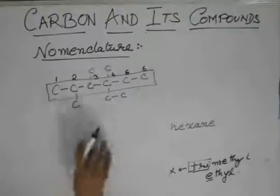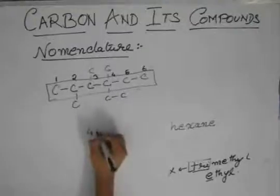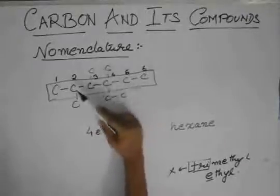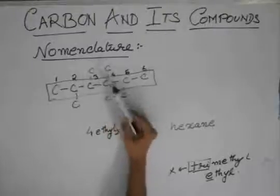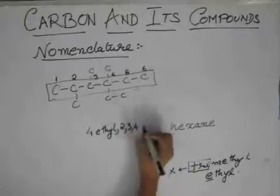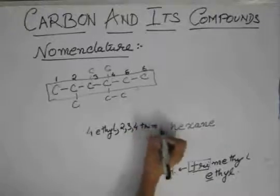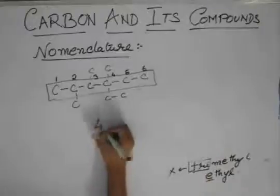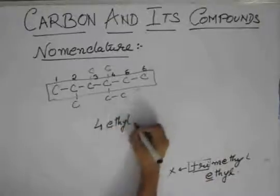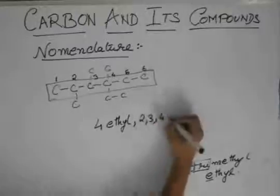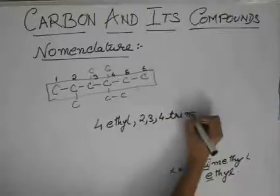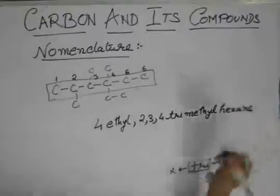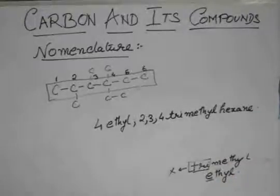So it's ethyl. Ethyl is on 4. So it's 4-ethyl, comma, 2, 3, 4, trimethyl, 4-ethyl-2,3,4-trimethylhexane. This is the name of this compound.